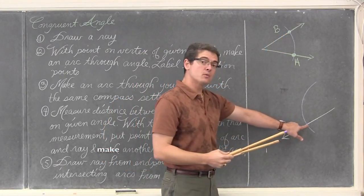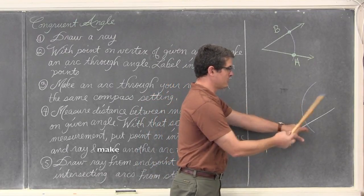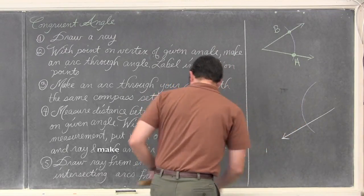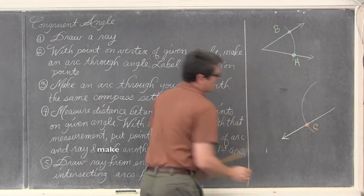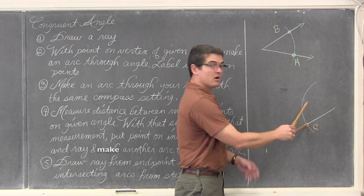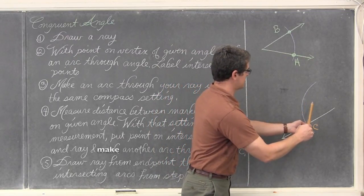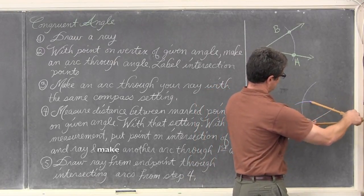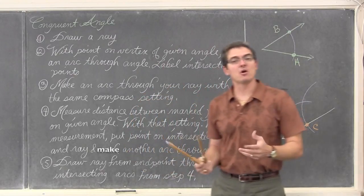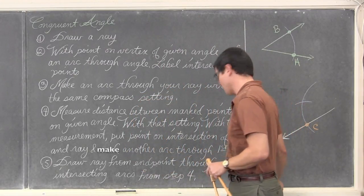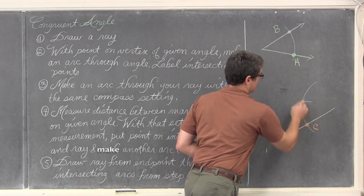I want you to take this setting that we just measured from point A to point B, go to the ray where we are trying to draw the new one, put the point of your compass on that intersection point, it would probably have been easier if I had labeled it, let's call that point C. And I want to make an arc going through the first arc that we just drew a second ago. The intersection of those two arcs needs to be marked again with another letter. Let's call this point D.